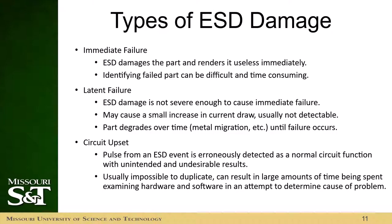There are three types of ESD damage: immediate failure, latent failure, and circuit upset. Immediate failure may be felt as it happens — the ESD event will render the part useless pretty much immediately, though identifying which part actually failed can be difficult and time consuming. Latent failure is also really important: the ESD damage might not be severe enough to cause immediate failure, but can lead to a failure happening later down the road. Something might be completed and working fine, then sent off to the next step, and all of a sudden something fails — when in reality it was an ESD event that caused that part to fail at a later time.